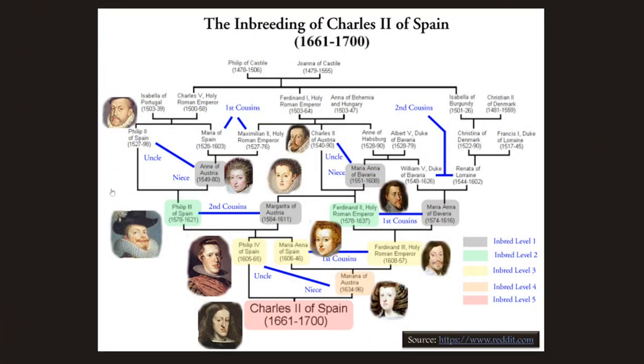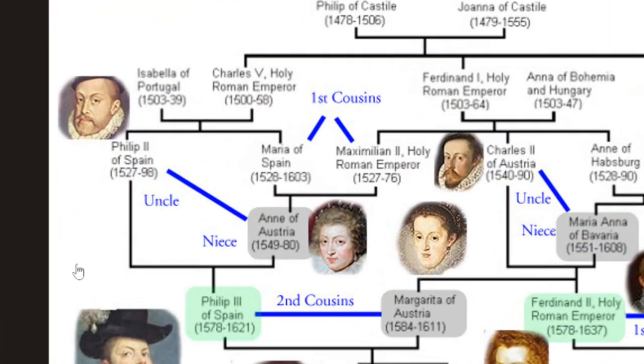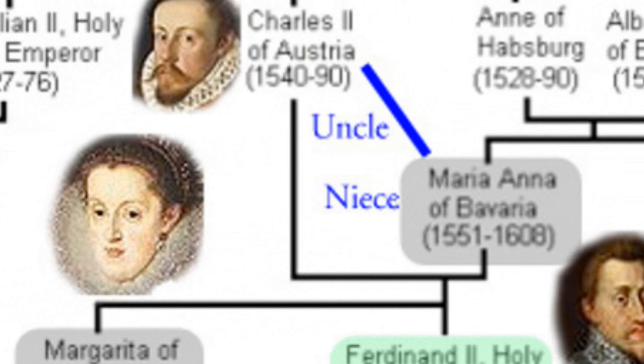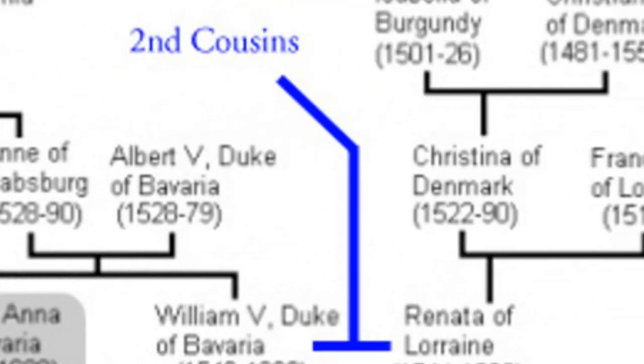I'm not just talking about a little bit inbred — like discovering you're someone's third or second cousin, which is not necessarily biologically toxic. What is biologically toxic is what Reddit calls inbred level five. As we go through, we see Philip II married to his niece, first cousins, second cousins — socially unacceptable, but biologically maybe not so much of a problem.